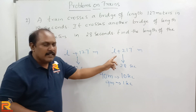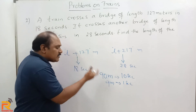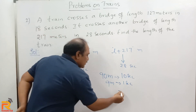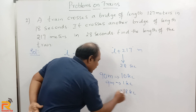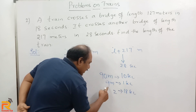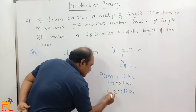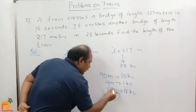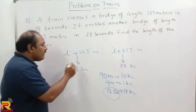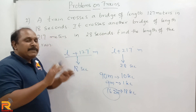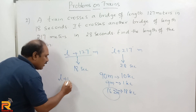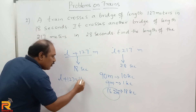In 1 second, how much distance will it travel? 90 divided by 10 equals 9 meters. So the train travels 9 meters in 1 second. Now let us take the first condition: in 18 seconds the train travels 9 into 18 equals 162 meters. But we already know that the train travels L plus 127 meters in 18 seconds.